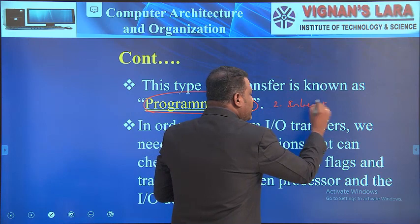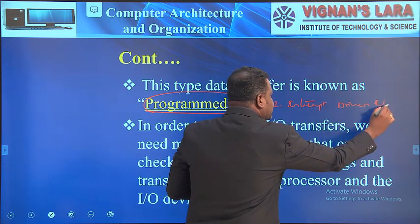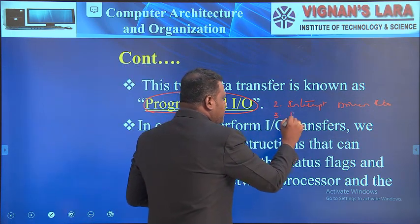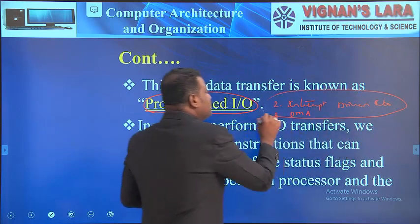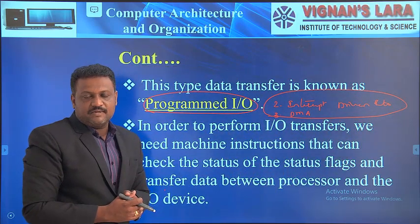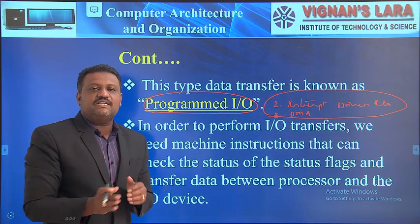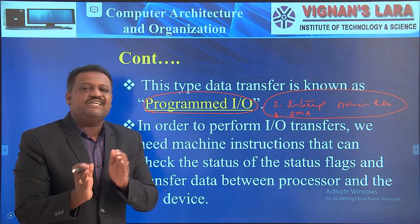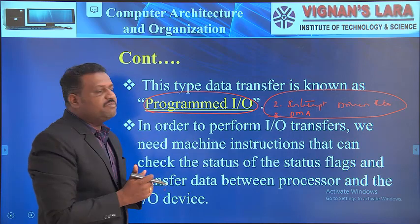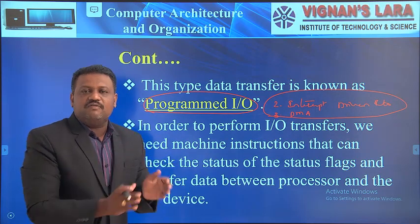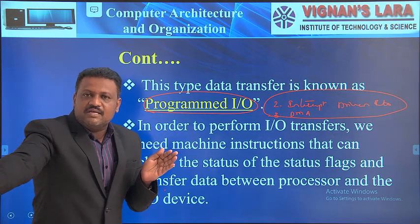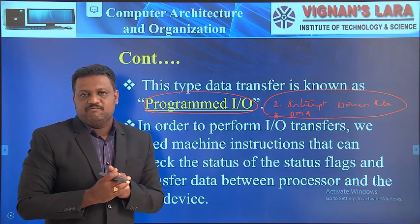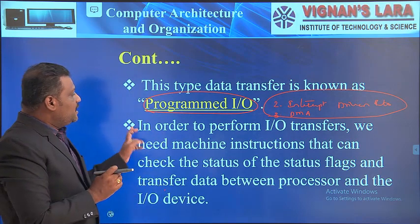The second data transfer technique is interrupt-driven I/O, and the third one is DMA (Direct Memory Access). These two concepts we will learn in upcoming classes. For now, remember that transferring data between I/O devices and a processor or memory uses what we call I/O data transfer techniques. In programmed I/O, we use a set of instructions to monitor the S-in bit as well as the S-out bit of input and output devices.